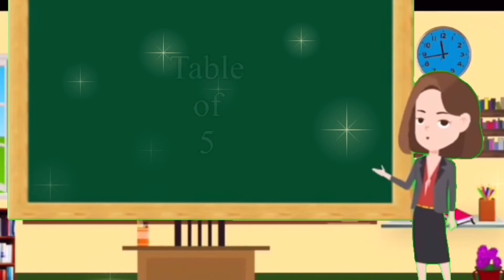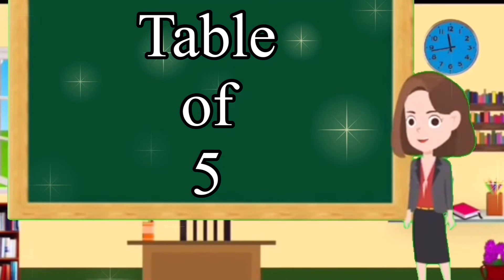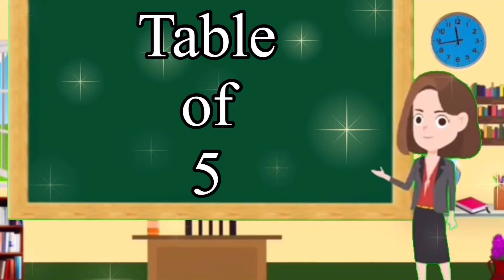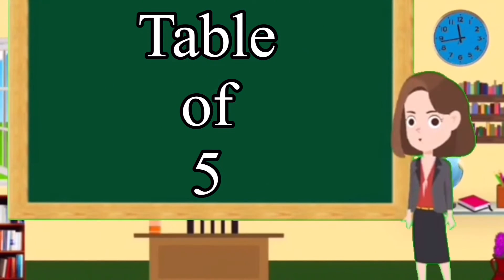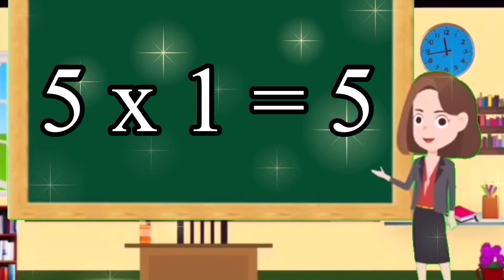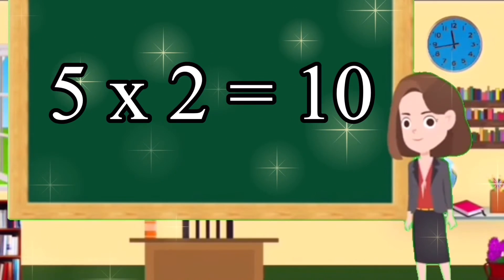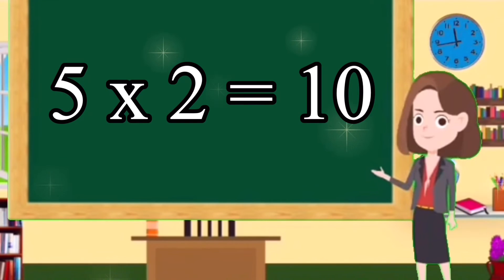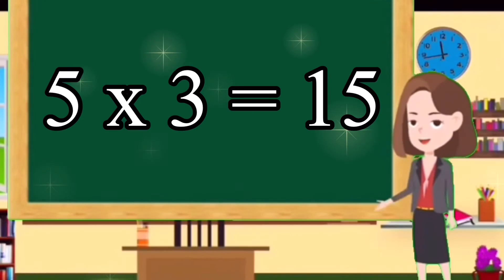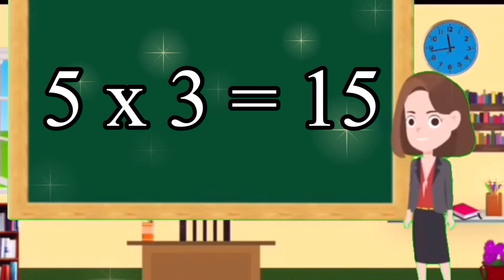Table of 5. Five ones are five. Five twos are ten. Five threes are fifteen.